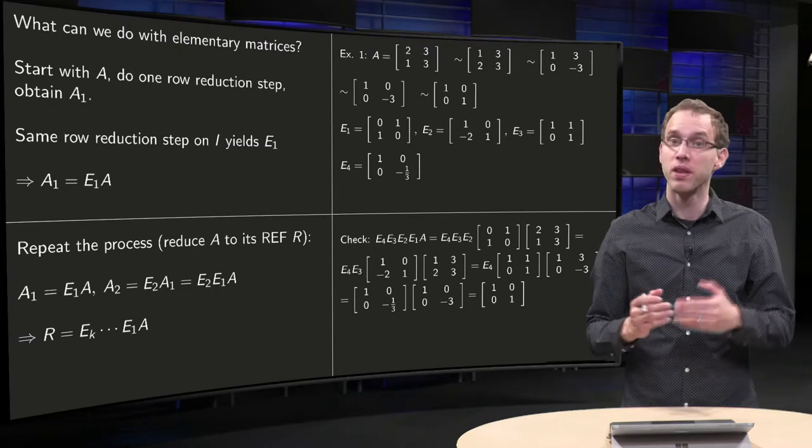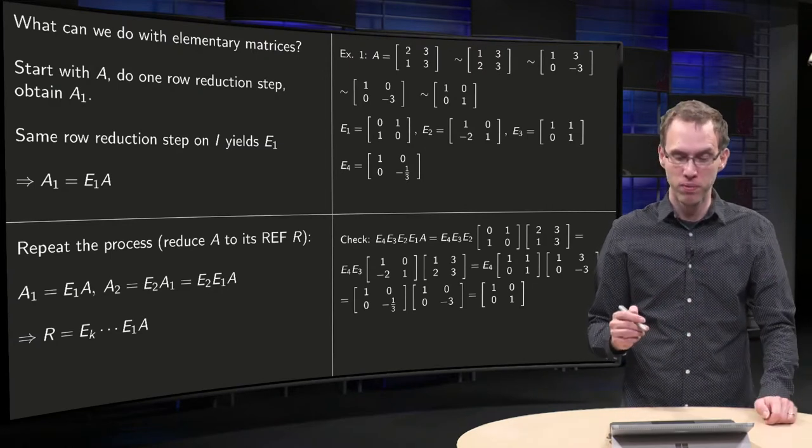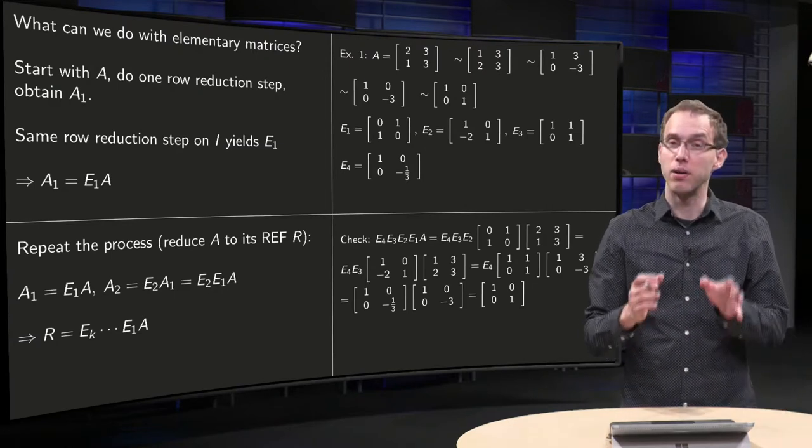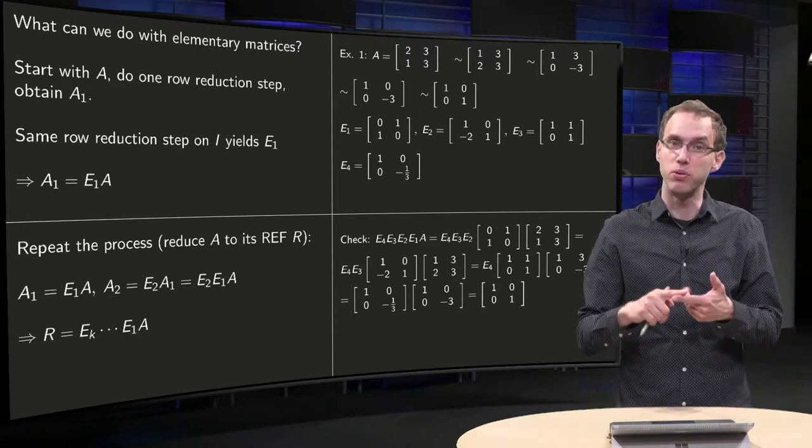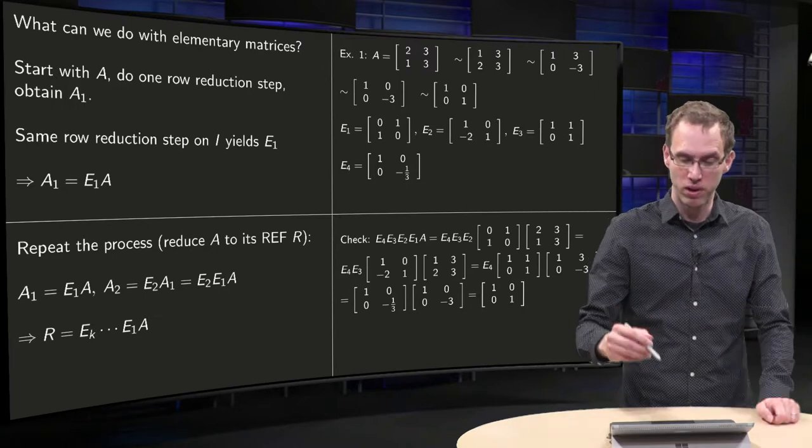And now we know, because we have E1 up to E4, that we can obtain our row-reduced echelon form of A by multiplying with E1, E2, E3, E4 in the correct order on the left.